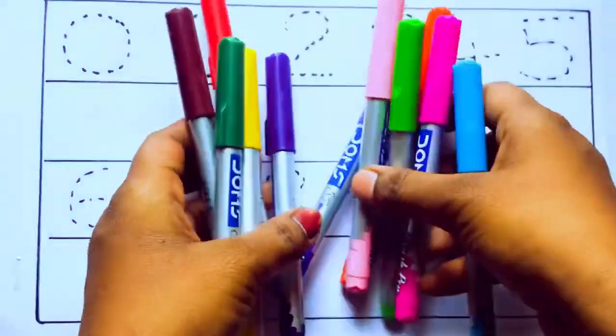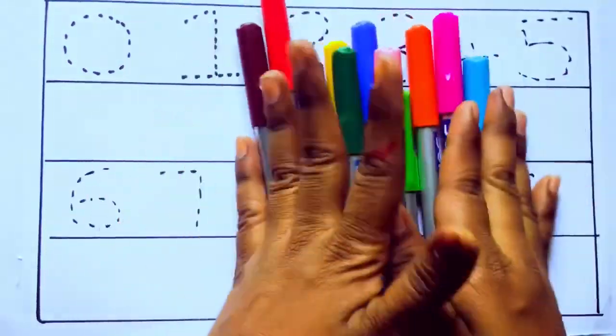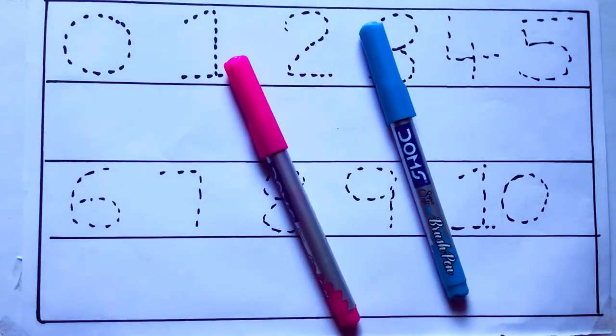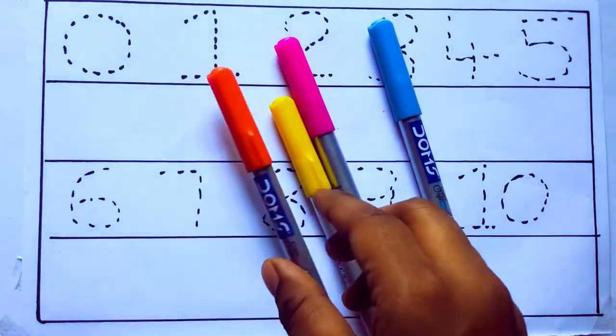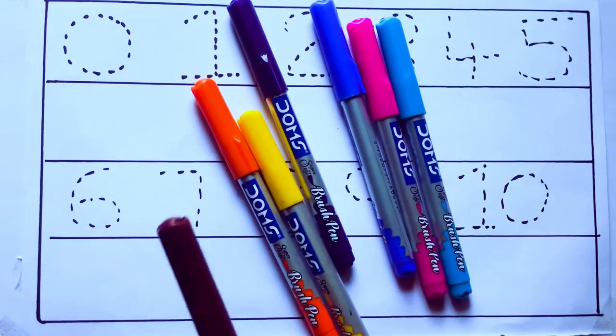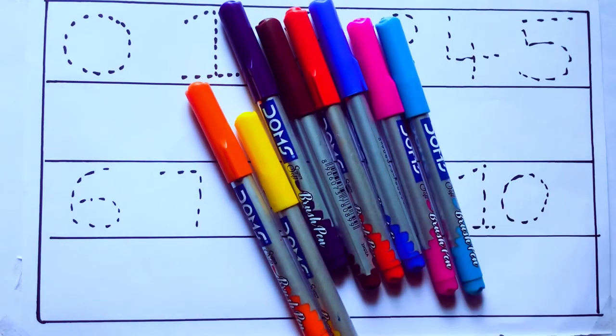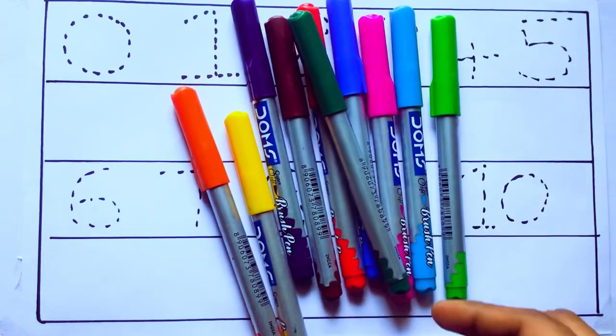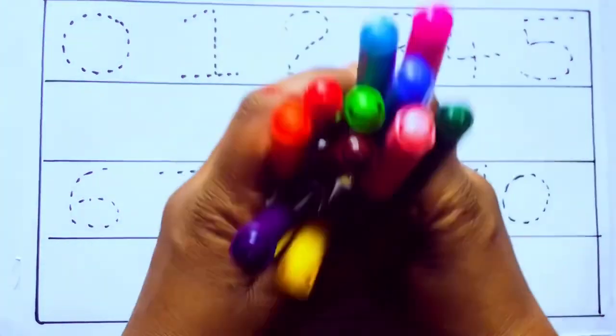Let's learn some colors. These are all the color pencils. Let's learn the names. Sky blue color, pink color, yellow color, orange color, violet color, blue color, brown color, red color, green color, and pink color.